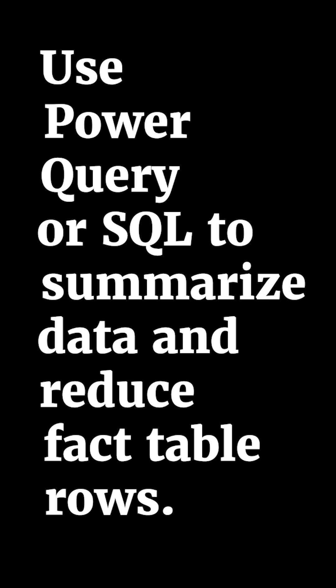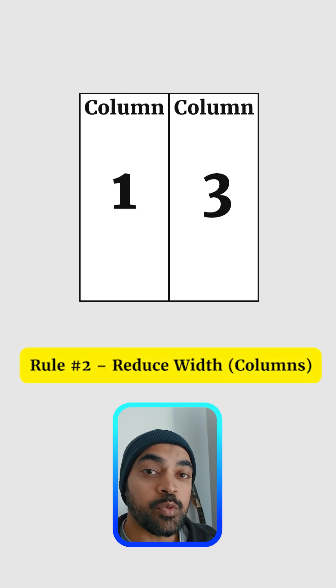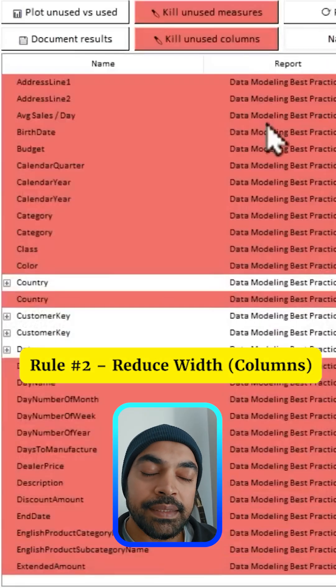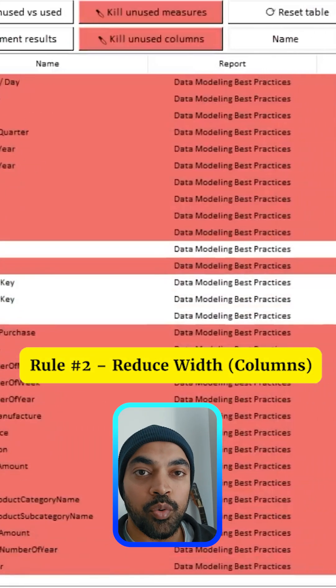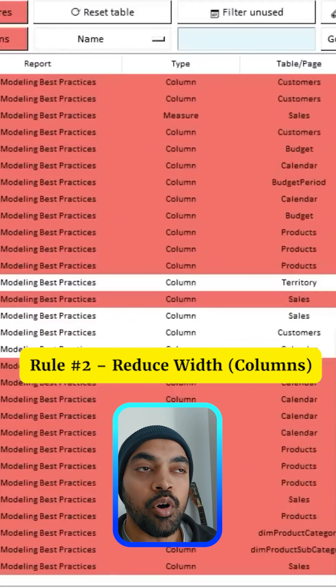Summarize either in Power Query or in SQL, wherever. Use the ETL tools to summarize the data so that you can reduce the height of the fact table. Number two, reduce the width of the fact table, which means you remove all the unnecessary columns that you don't need. There's no point having those columns in the model — your model is just going to be bloated.